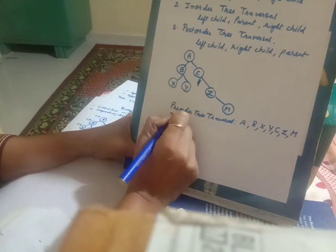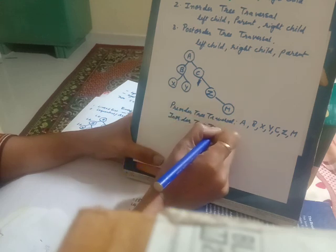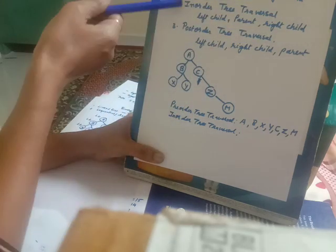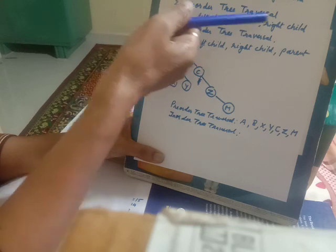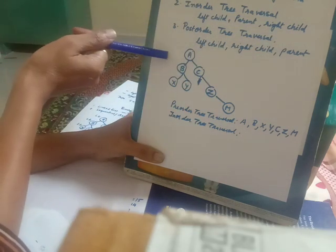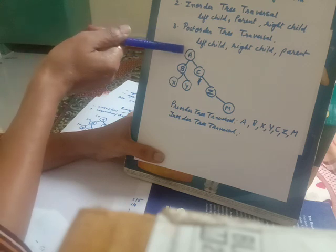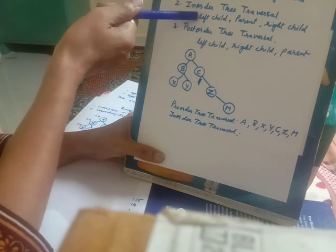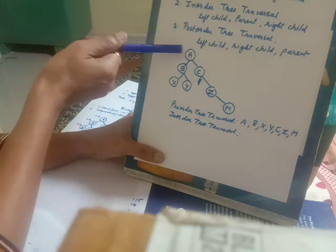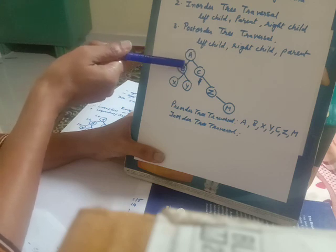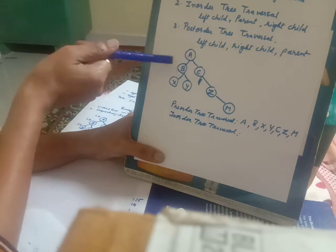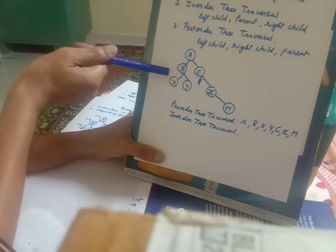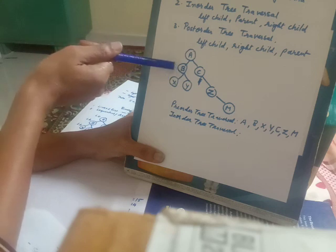The next kind of traversal is in-order tree traversal. As studied, the parent is processed in between the left and the right — first the left child, followed by the parent, then the right child. We start with the root node, but it cannot be processed because in in-order, the parent must be processed only after the left child. So we move towards the left of A. B is the left child, but it also has a left child, so B cannot be processed either. We move towards the left child of B, which is X.